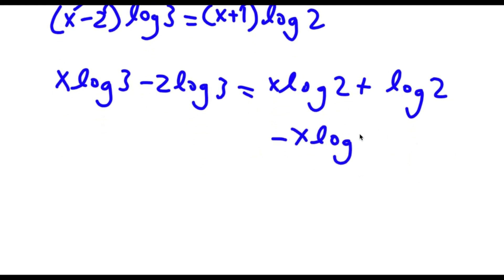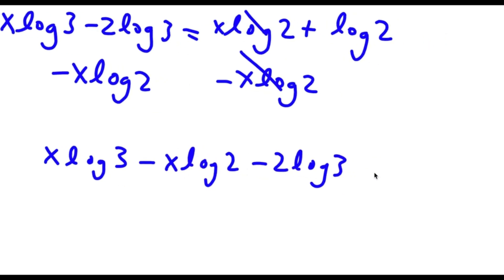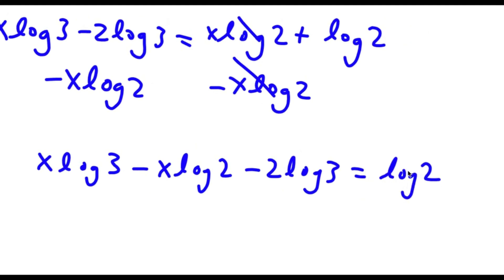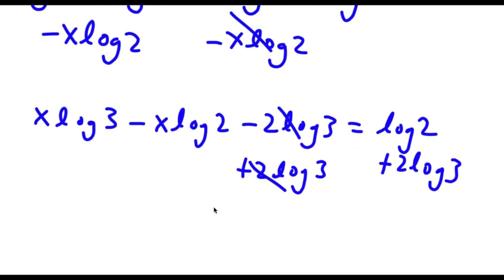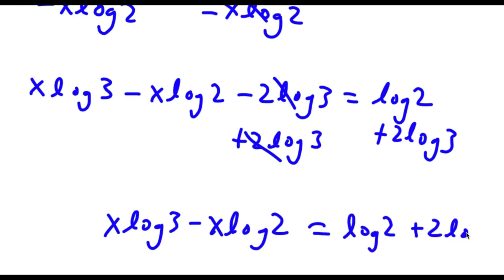Now I'm going to subtract x·log 2 from both sides. These two cancel out and I'm left with x·log 3 minus x·log 2 minus 2·log 3 is equal to log 2. Then I'm going to add 2·log 3 on both sides, and those cancel out. Now I'm left with x·log 3 minus x·log 2 is equal to log 2 plus 2·log 3.